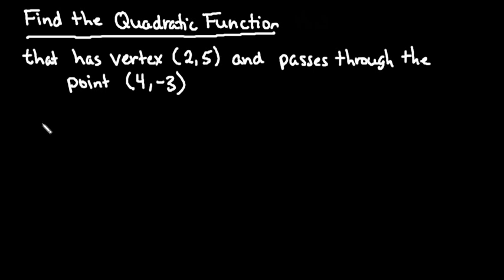Hi, for this video we're going to find the quadratic function that has vertex (2, 5) and passes through the point (4, -3).